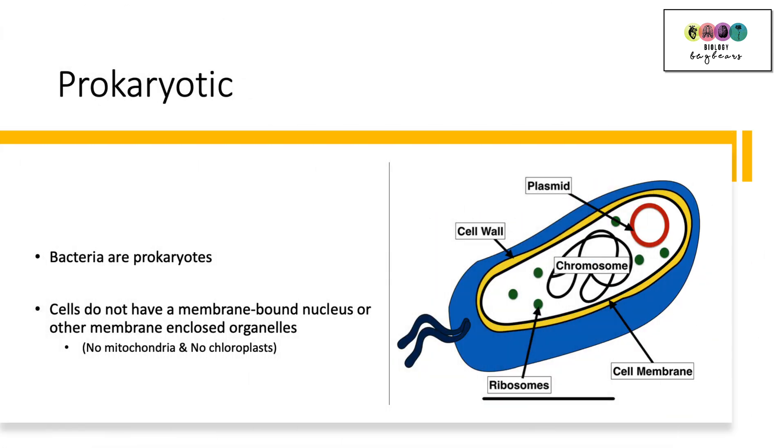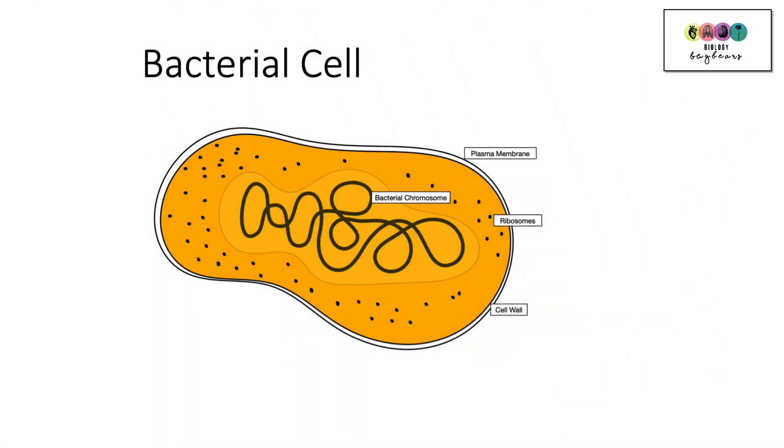So the other group of cells are the prokaryotic cells. So basically bacteria. These are prokaryotes. These are cells that do not have a membrane-bound nucleus or other membrane-enclosed organelles. So no mitochondria and no chloroplasts. So here is our bacterial cell, our prokaryotic cell. There is no nucleus. There's no nucleus with a membrane around it. Instead there is just the bacterial chromosome which is folded into the center of the cell. There still is a cell membrane. There is also these little structures called ribosomes and there is a cell wall in bacteria.